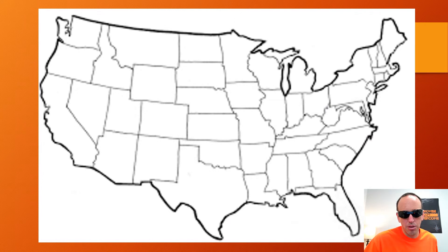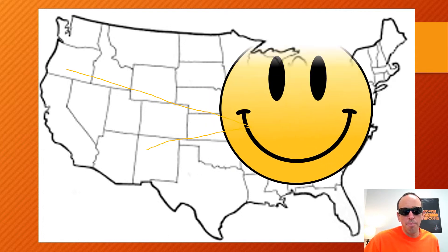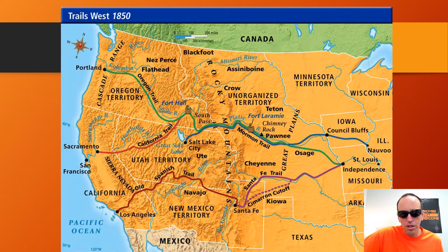Do you remember the trails we learned about? The Oregon Trail and the Santa Fe Trail. Here's a much better drawing showing all the trails. The two you'll need to know are the Green Trail — the Oregon Trail — and the Purple Trail — the Santa Fe Trail.